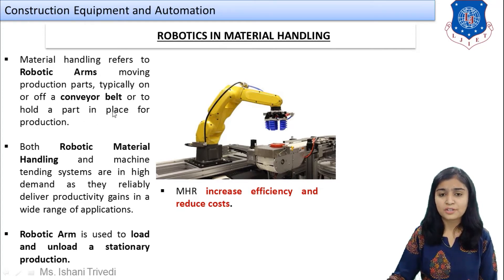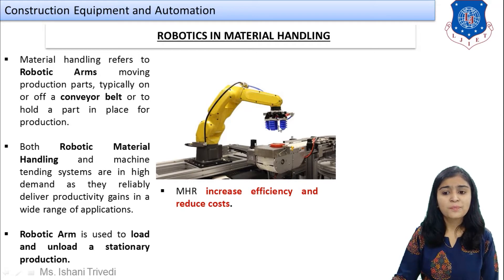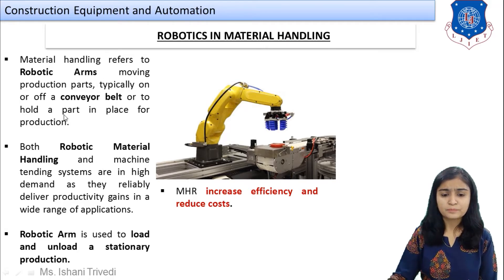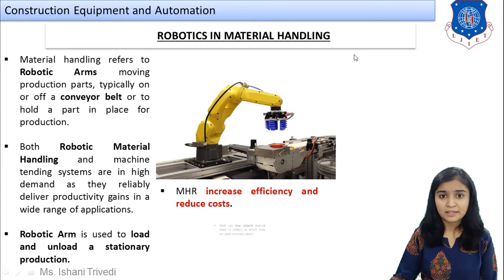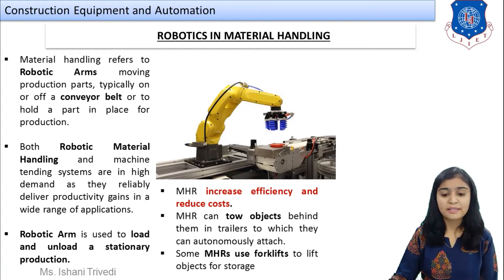Material handling refers to robotic arms moving production parts, typically on a conveyor belt, or holding a part in place during production. In simple terms, a robotic arm is mounted on a conveyor belt, it picks up the material and puts it on the other side wherever required. Both robotic material handling and machine handling systems are in high demand as they reliably deliver productivity gains across a wide range of applications.